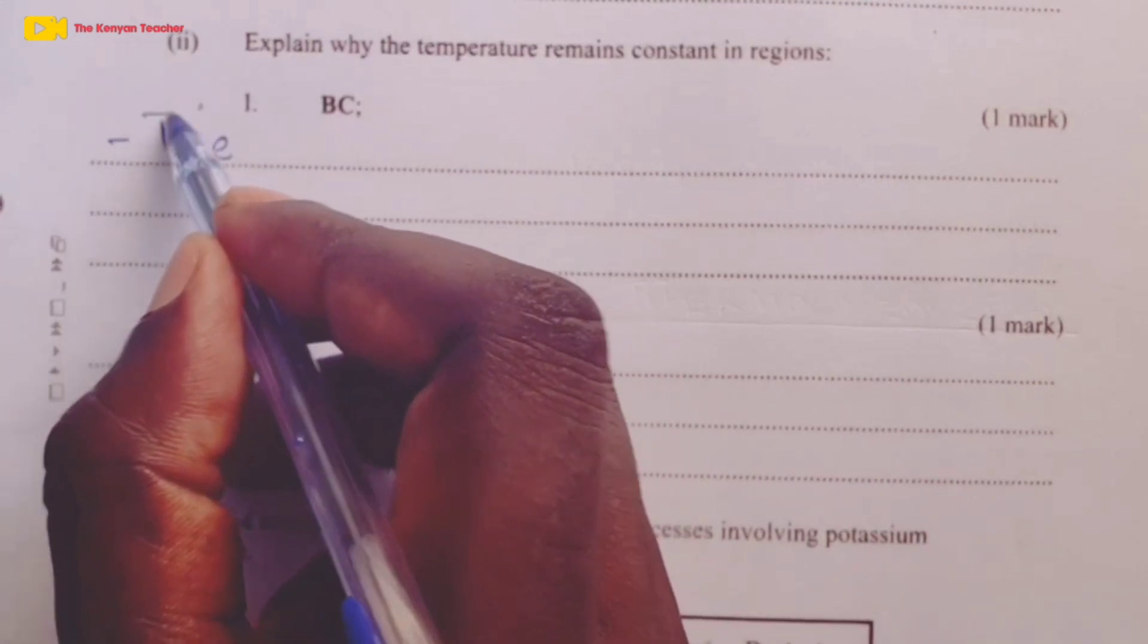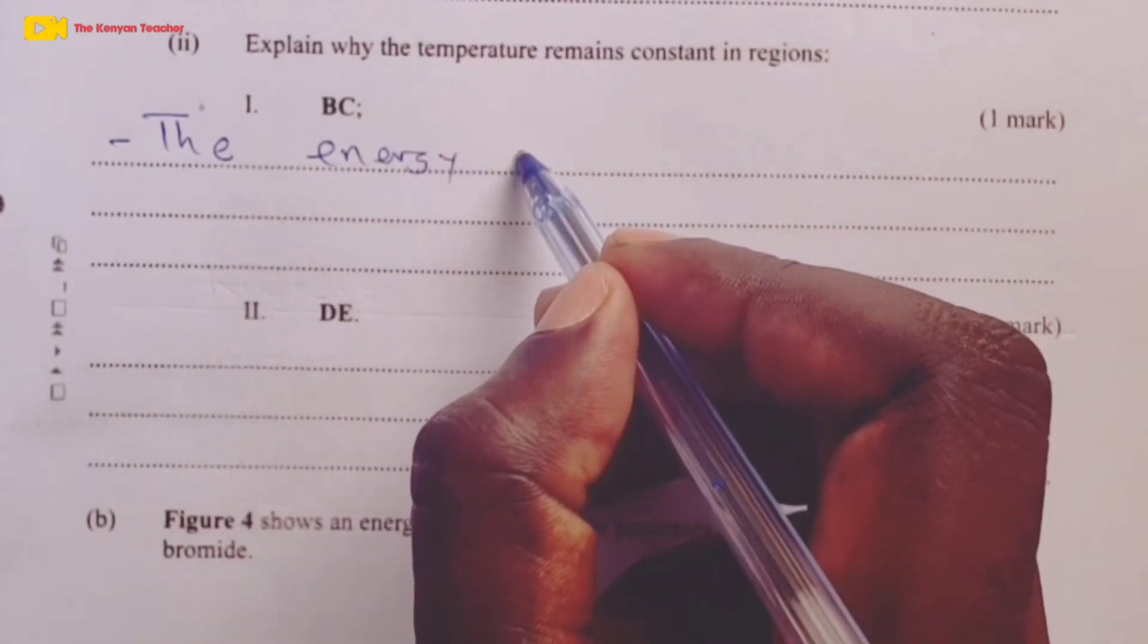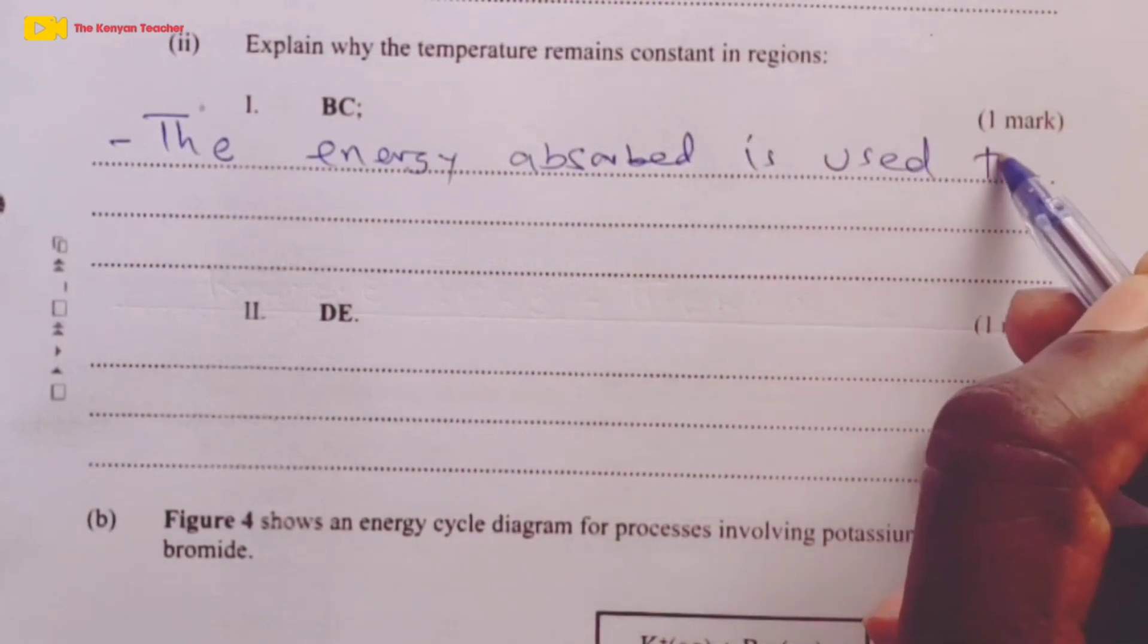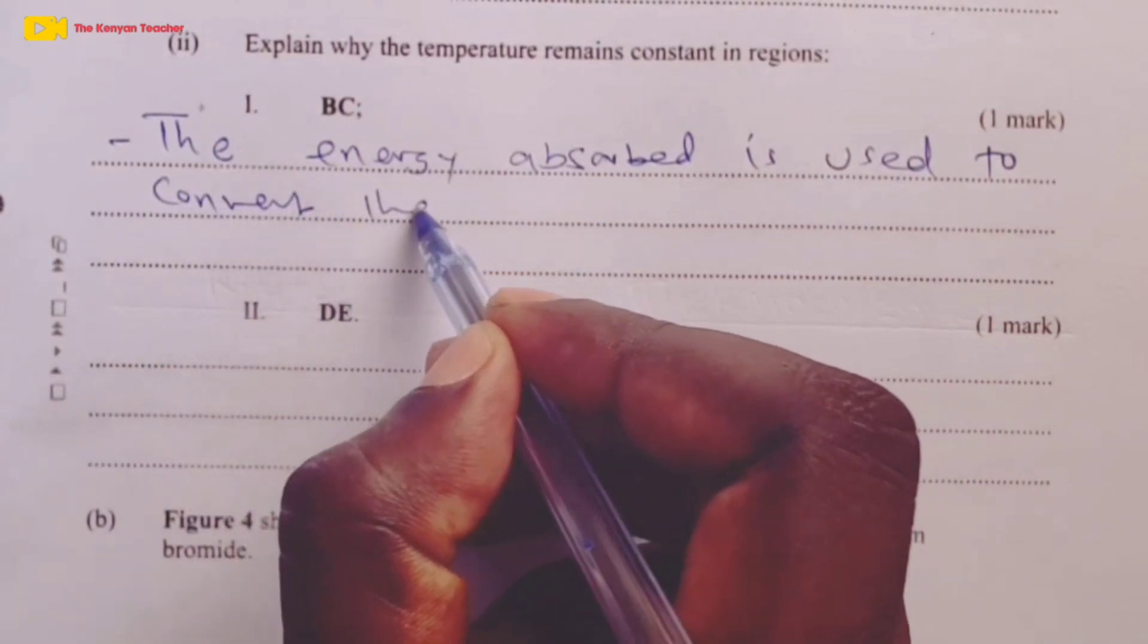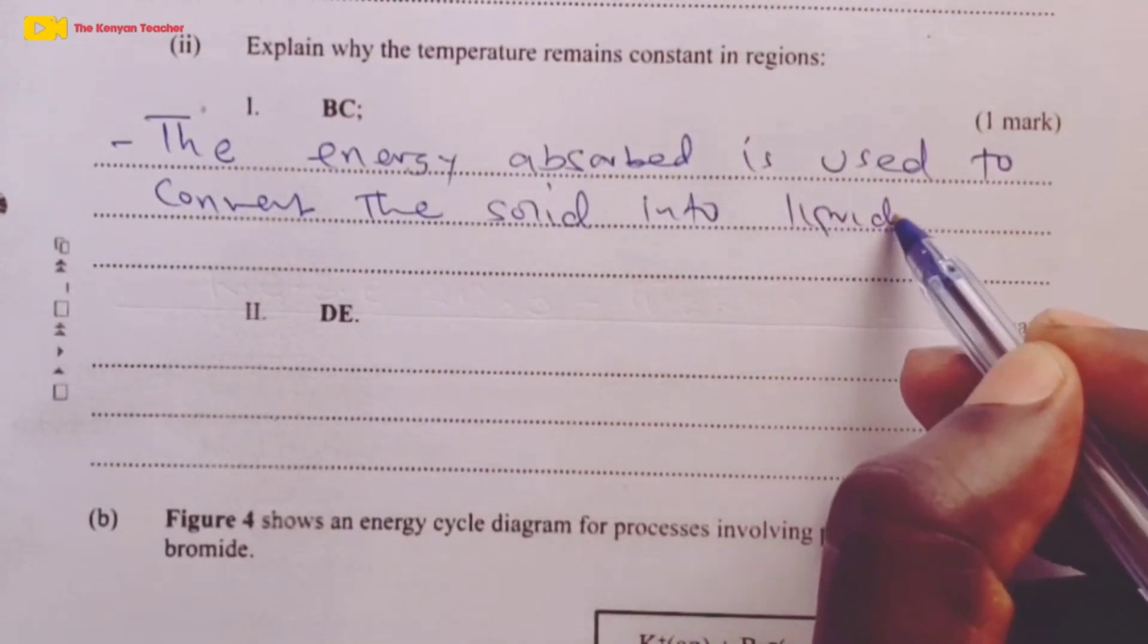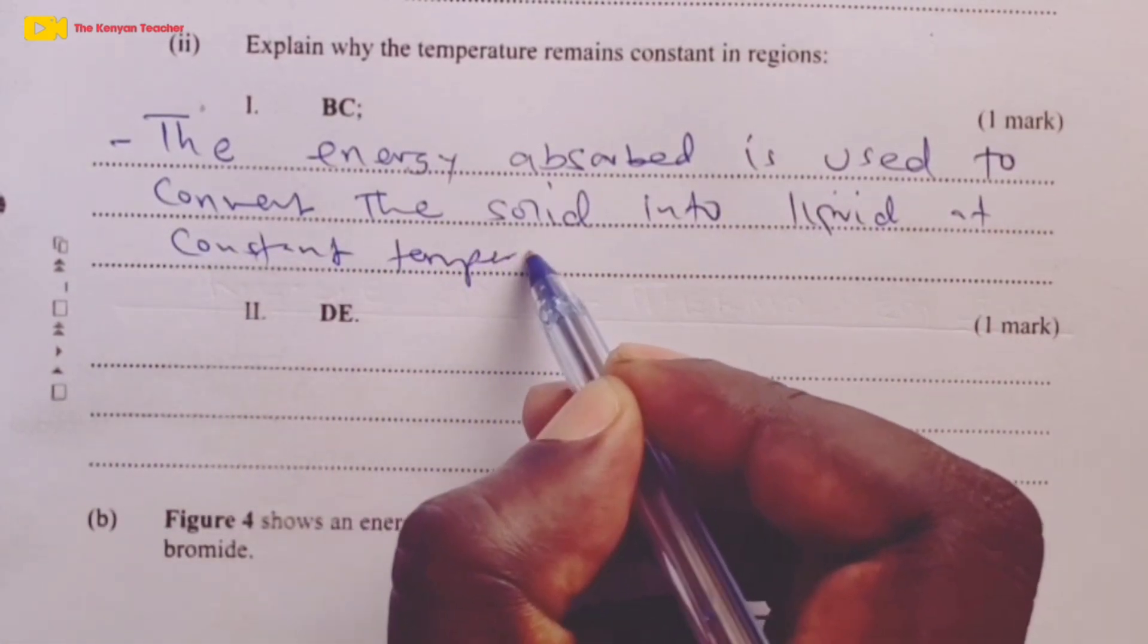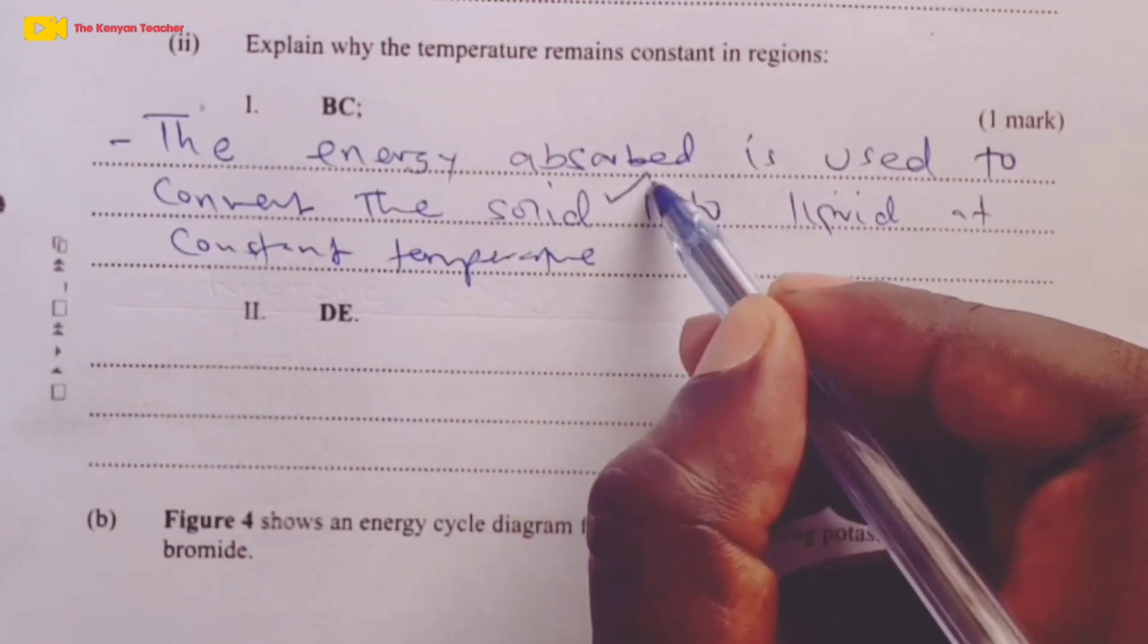What makes the temperature to be constant is that the energy absorbed by the substance is diverted. It is used to convert the solid into liquid. Of course, this happens at constant temperature. So this is the reason why we don't have any temperature rise between region B and C.